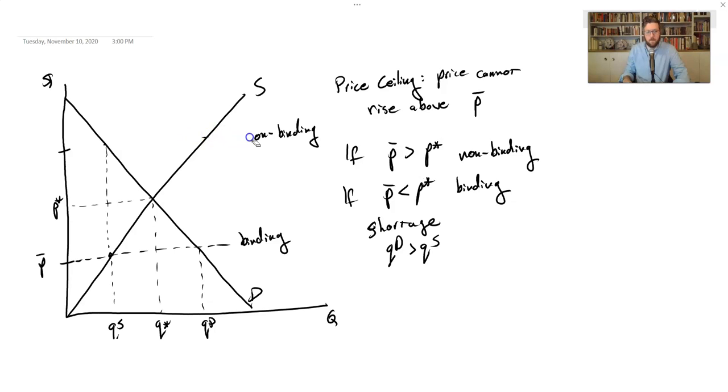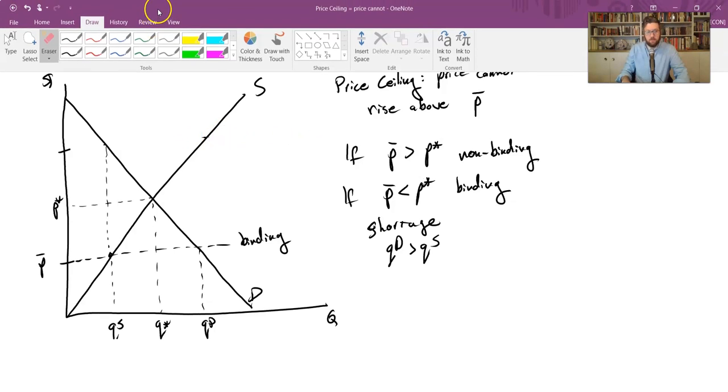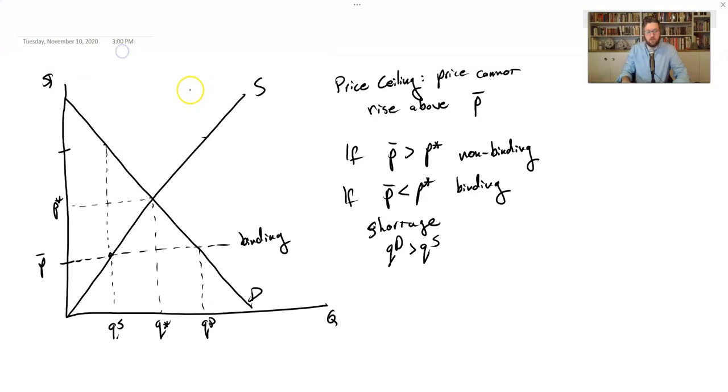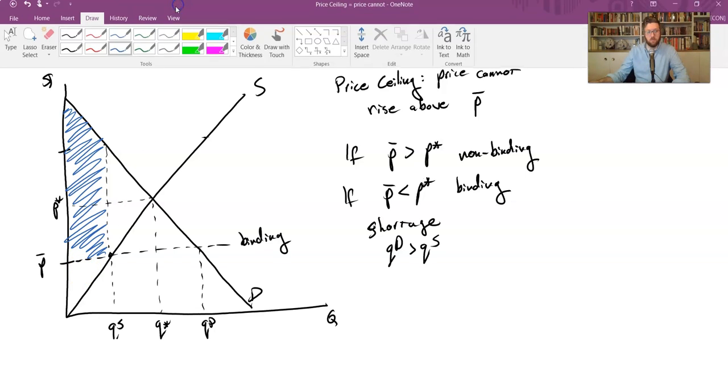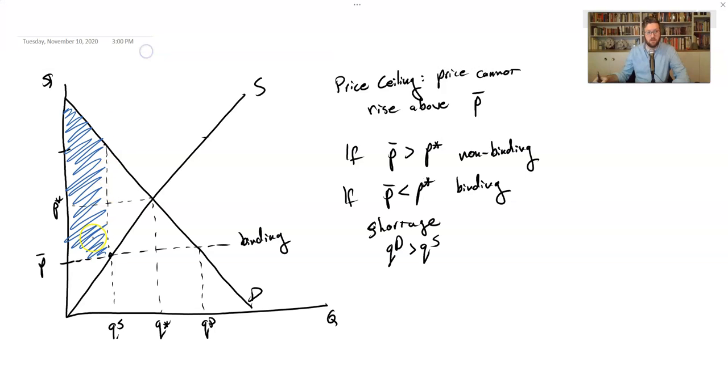So here's our situation. What's the new producer surplus? Well, the price that these guys are paying is all the way down here. In theory, it could be as high as this because these guys value the good up here and now they're paying a much lower price for it. So their consumer surplus is perhaps a lot higher.